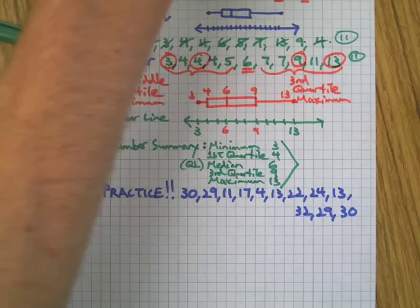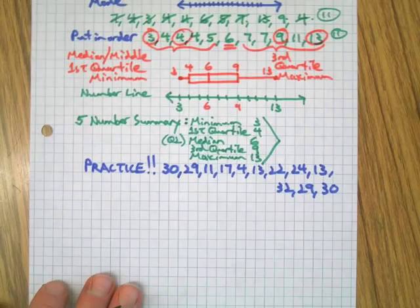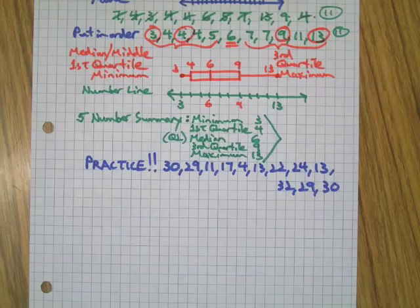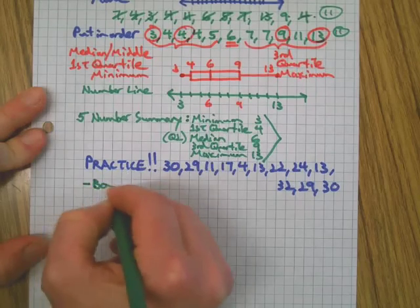Five number summary, box plot, beautiful. Now we just need to practice. We'll have you do one. Copy down this set of numbers, put it in order, make a box plot and a five number summary.